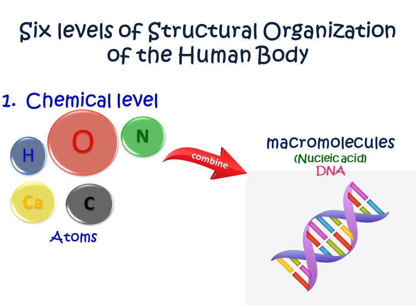The chemical level involves interactions among atoms through subatomic particles: protons, neutrons, and electrons. There are 118 atoms that can be found in the periodic table of elements. Hydrogen, oxygen, nitrogen, calcium, and carbon are the major atoms present in our body. Interactions and combinations of these atoms form molecules or macromolecules.